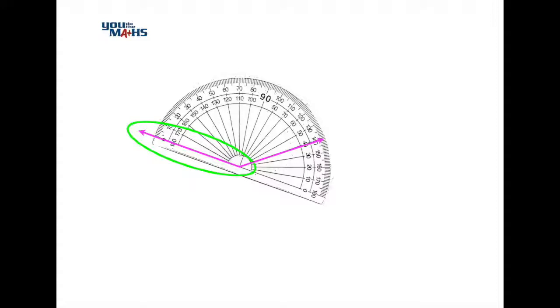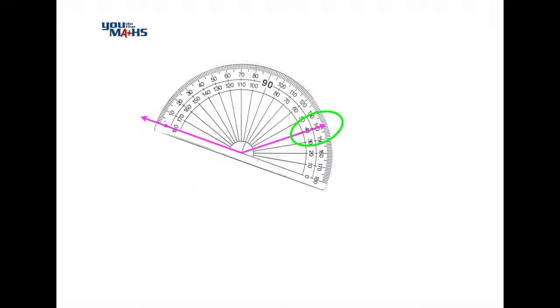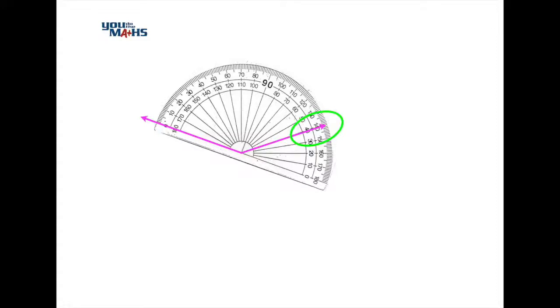In this case the 0 is on the outside, so what we need to do is match up the outside numbers with the other ray of the angle. In this case the angle is approximately 141 degrees, as shown in the green oval shape.